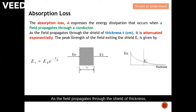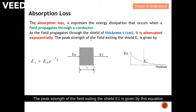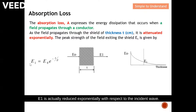As the field propagates through the shield of thickness t, normally in centimeters, it attenuates exponentially. The peak strength of the field exiting the shield, E1, is given by this equation. From this expression you can see that E1 is actually reduced exponentially with respect to the incident wave.